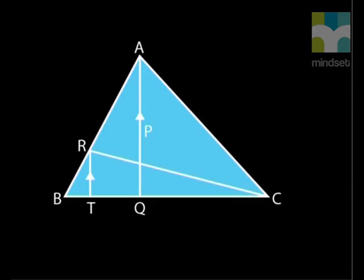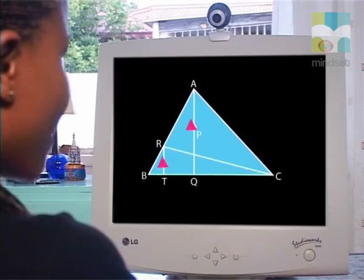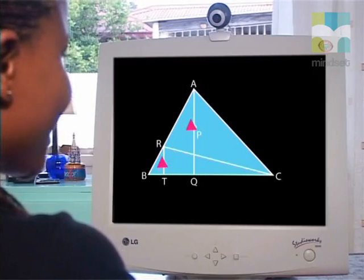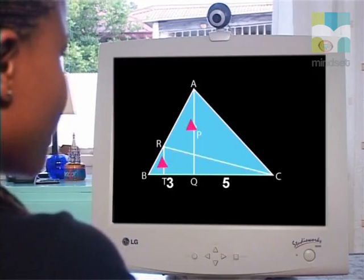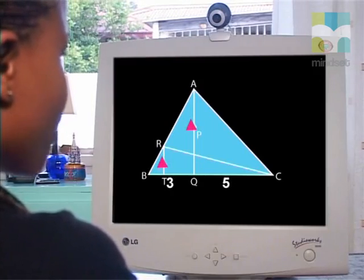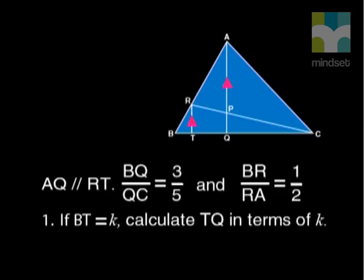What is given? AQ is parallel to RT. The ratio of BQ to QC is 3 to 5 and the ratio of BR to RA is 1 to 2. Yes. Have a good look at what information you are given. You should recognize which of these triangles have proportional sides based on the parallel lines RT and AQ.